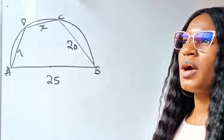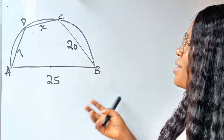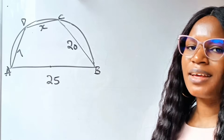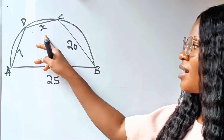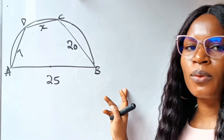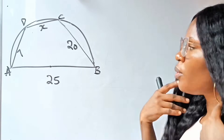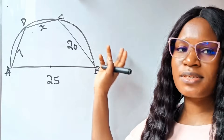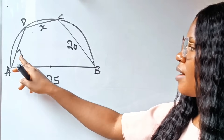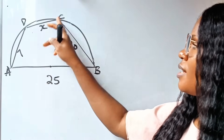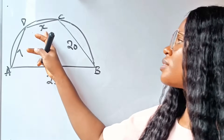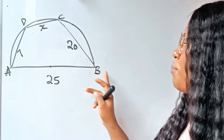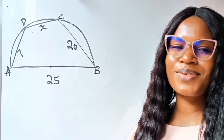Hi, wonderful people! Today we have an amazing geometric question to solve. We are asked to find x if this is a semicircle — not drawn to scale, so please pardon my hand sketch. AD is 7, DC is x (what we are asked to find), CB is 20, and AB is 25. Now let's get to work.